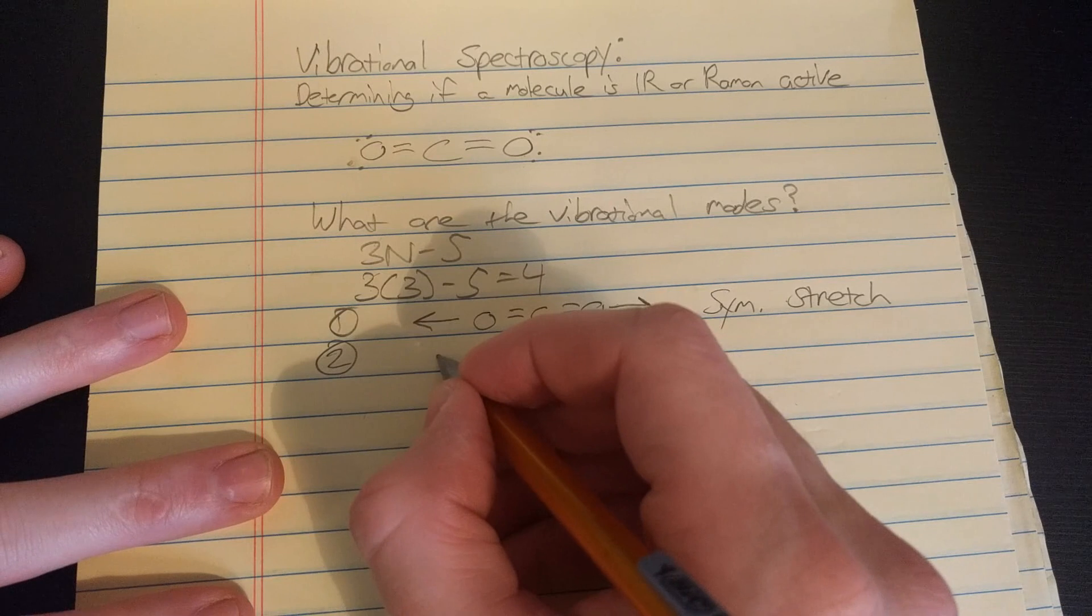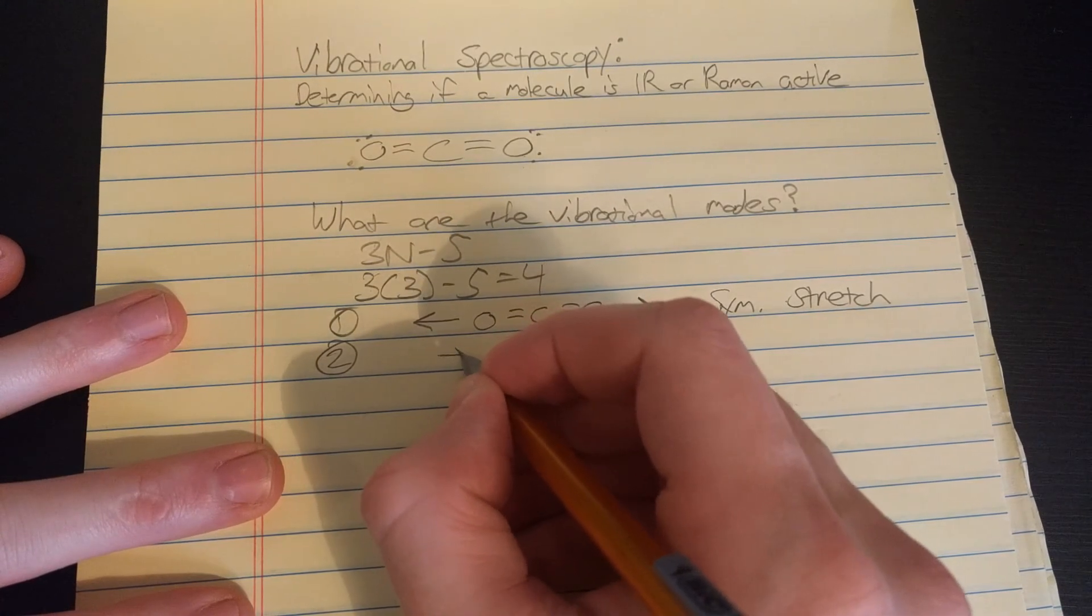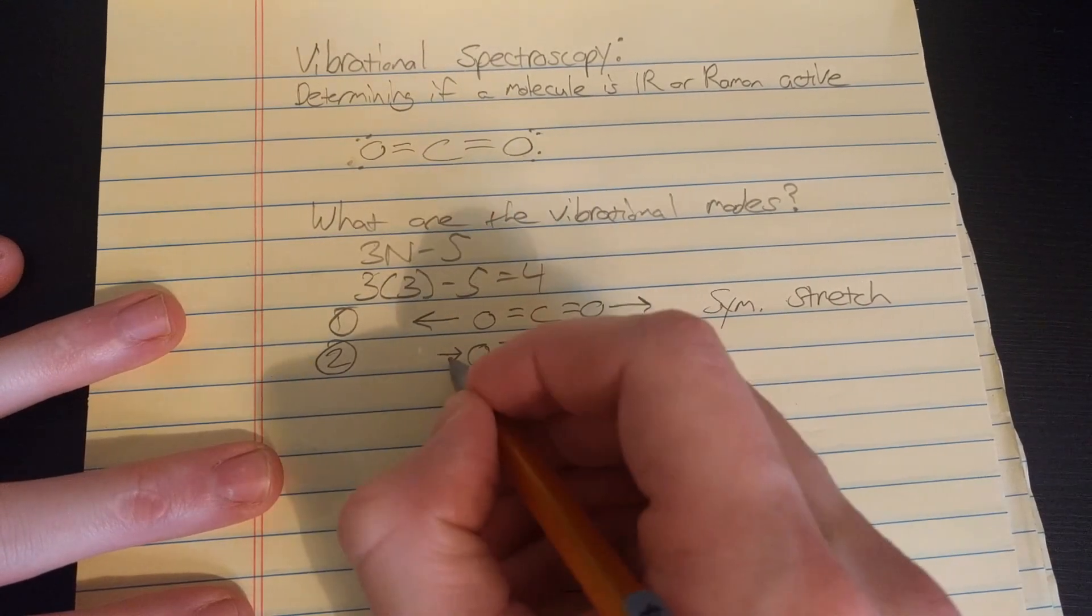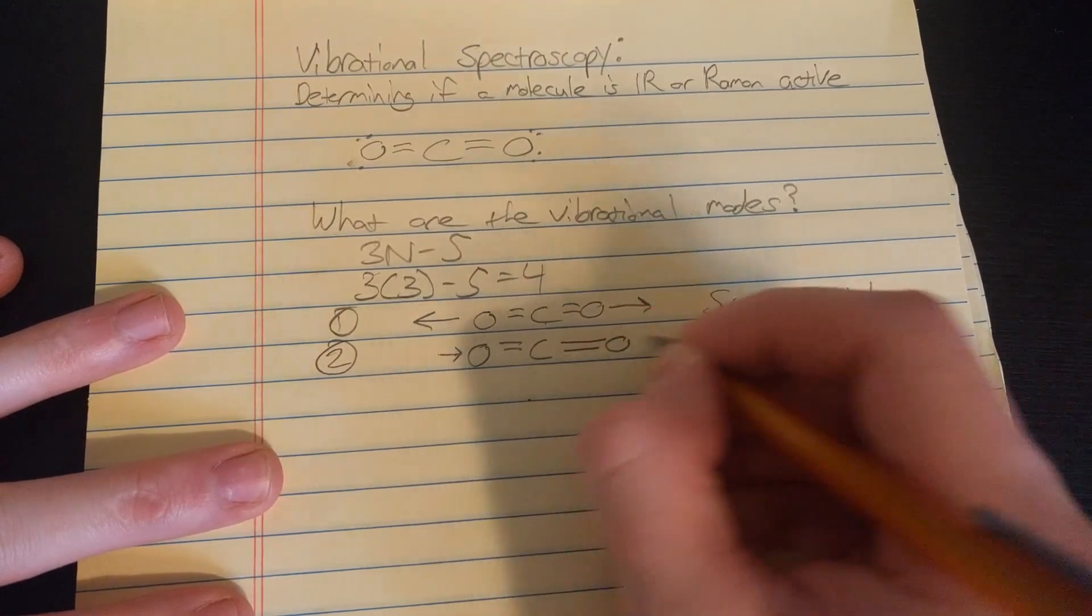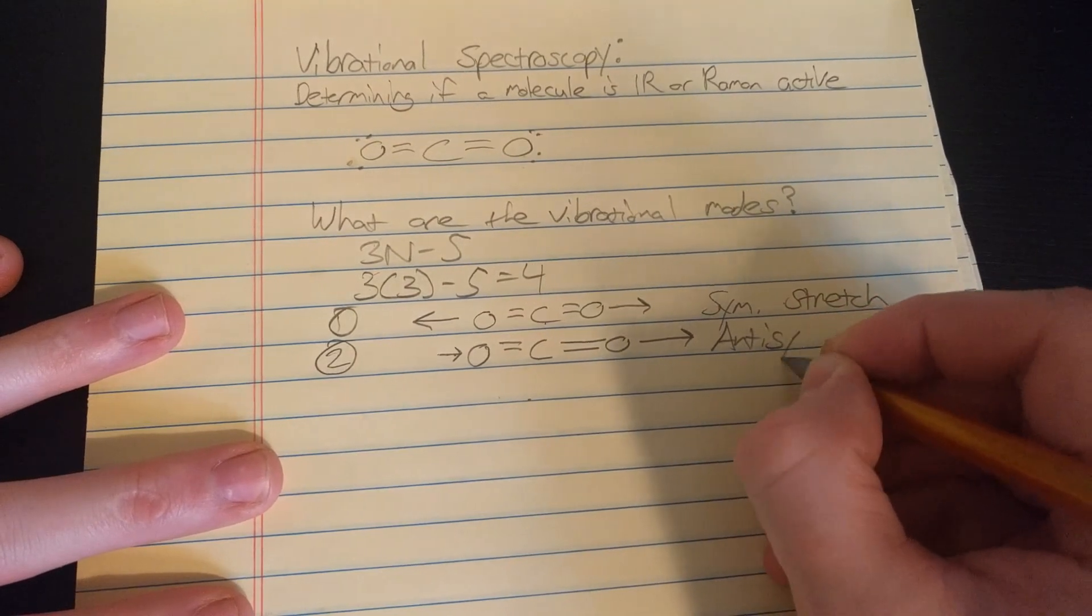If one is going in slightly, I'm drawing the arrow a little to depict that it's barely moving, the carbon still stationary but if one's going out a long ways, that's the antisymmetric stretch.